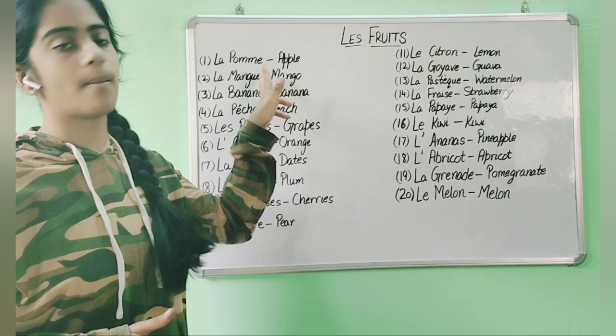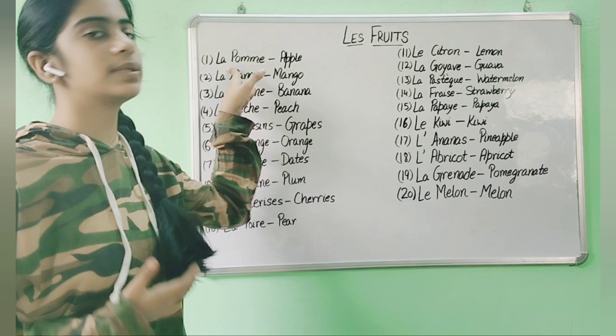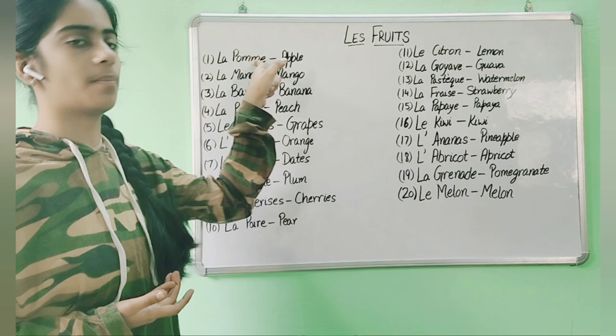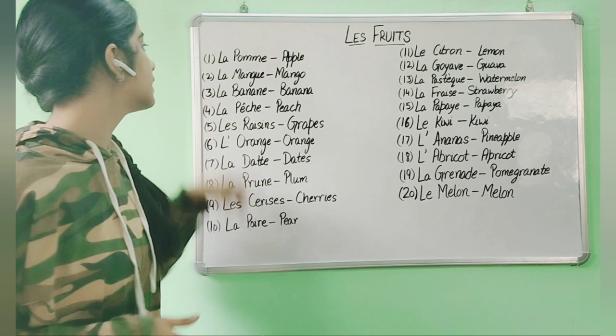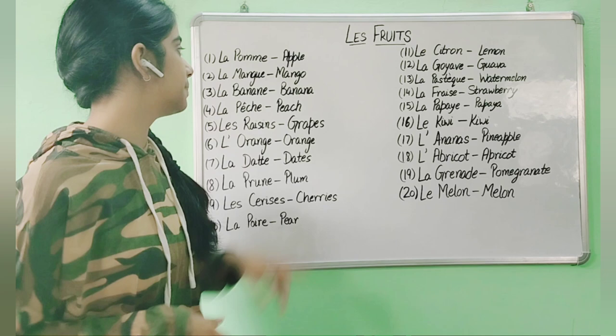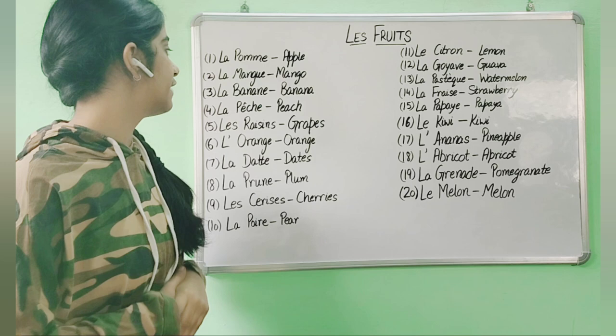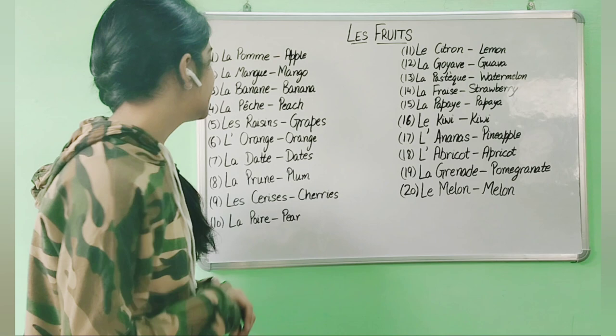First we have the apple, which is la pomme, la pomme. Now why are we using 'la' here? Because in French we use articles — 'la' means 'the', la pomme means 'the apple'. Then we have mango, which is la mangue, la mangue. Then banana, la banane, la banane. Then we have peach, which is la pêche, la pêche.